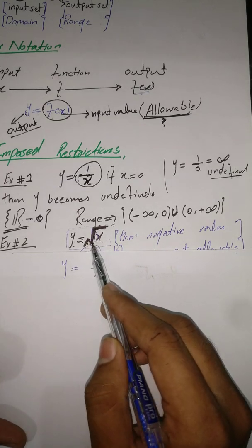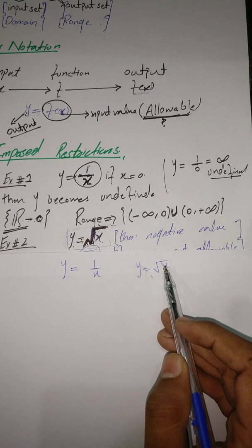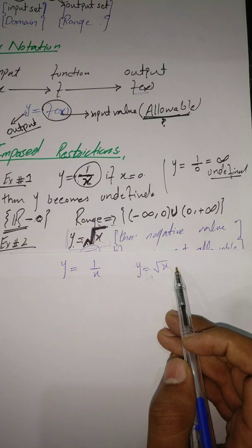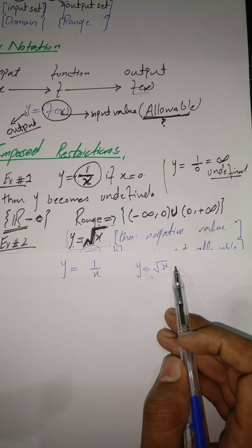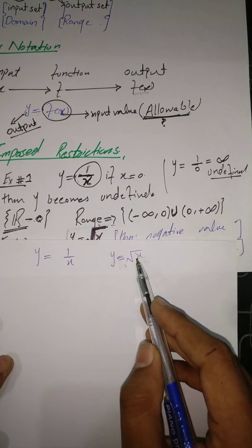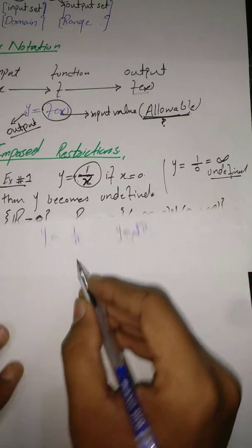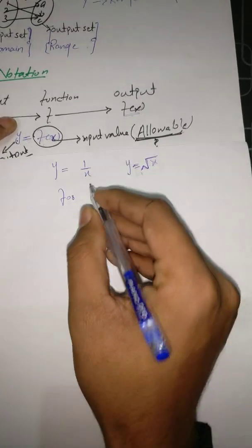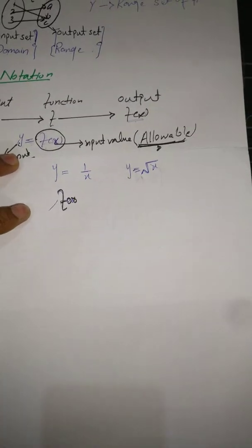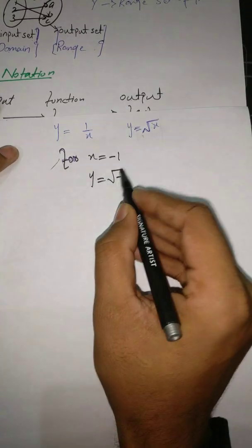Dear students, there are also restrictions on expressions which include square root terms. Consider y = √x. The second restriction applies to expressions or mathematical formulas which include an under-root term. We must make sure that the value under the square root sign is always positive. We cannot allow inputs which make the expression under the square root negative. For example, for x = -1, y = √(-1), which is an imaginary number.